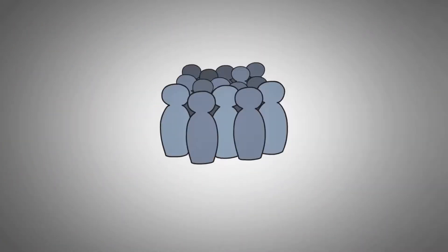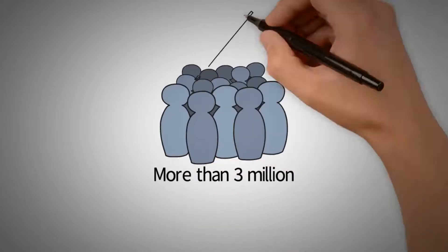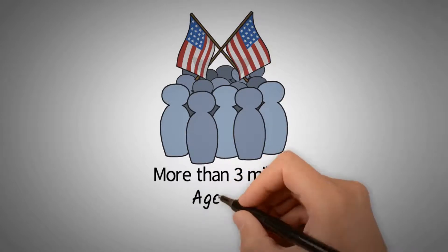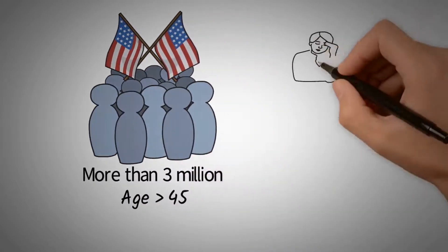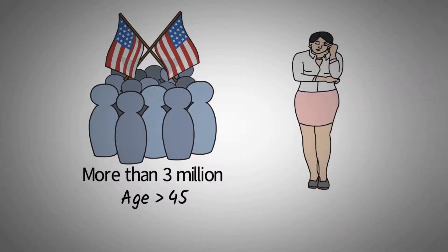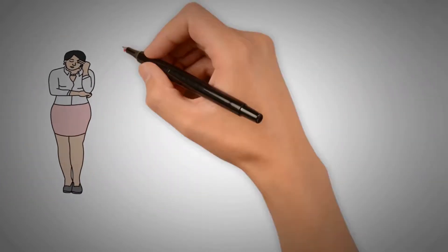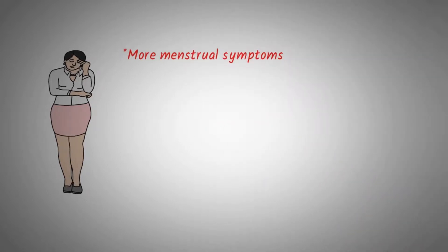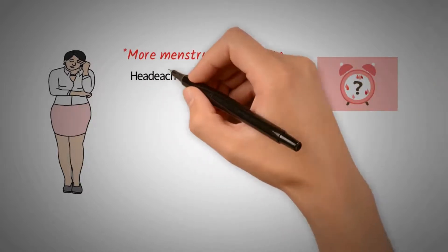More than 3 million people in the United States have IBD. IBD is more common in people who are over age 45. IBD affects women in unique ways. Women with IBD are more likely to experience premenstrual symptoms such as headache and menstrual pain.